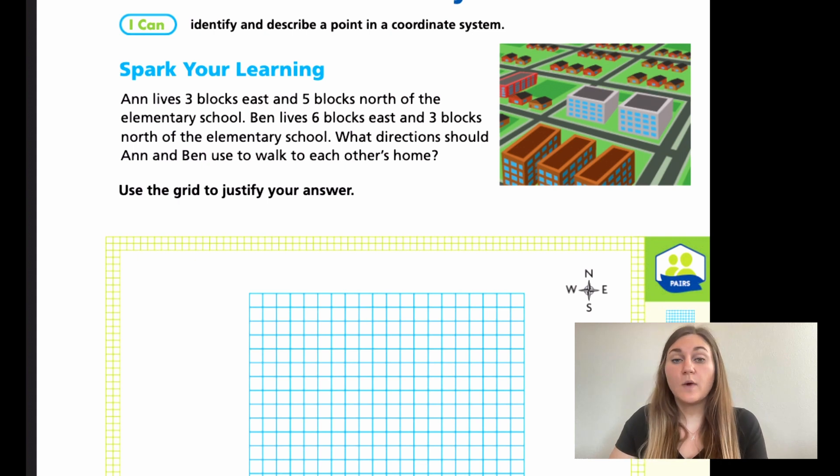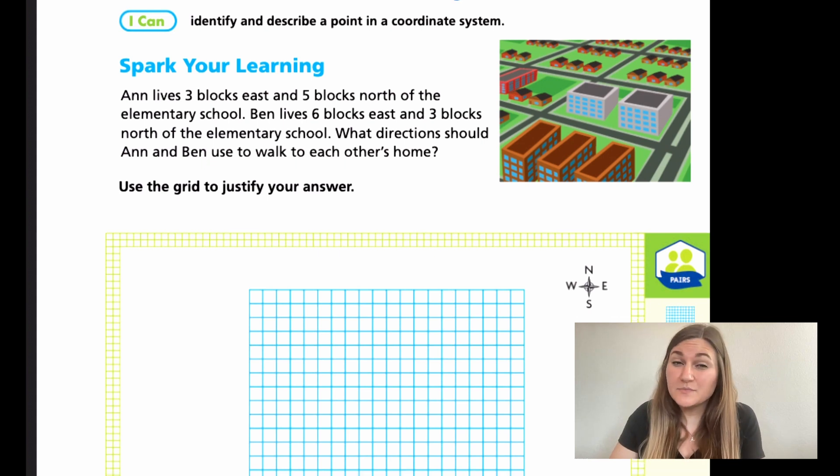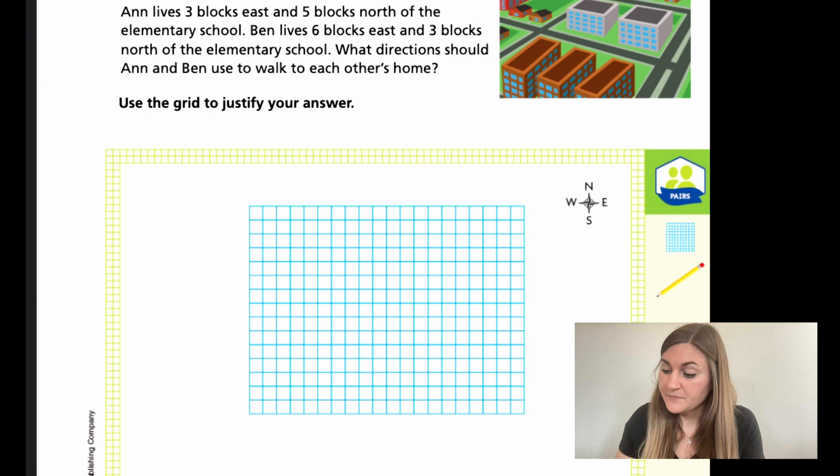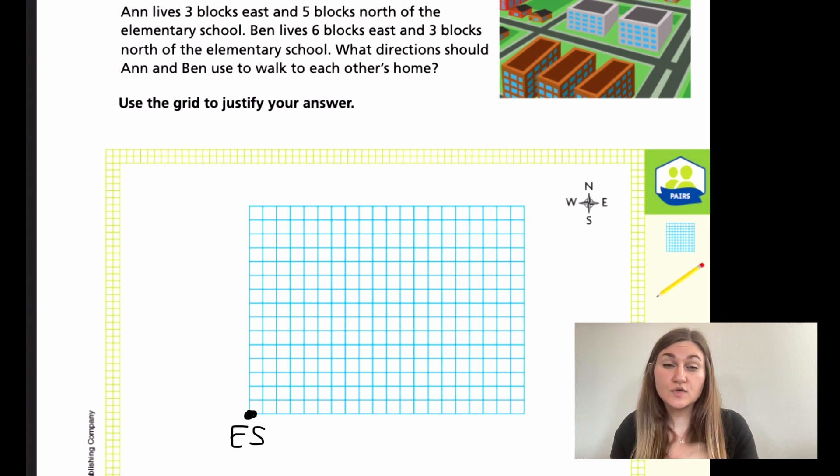It doesn't tell us exactly where the elementary school is on a grid, so I'm going to stick it in the corner for easy counting. I'm just going to draw a little point and say that is my elementary school, and I'm just going to label it E-S. Now let's start. It says Ann, she lives three blocks east, and east is going to the right. So I'm going to count three little squares over to the right. One, two, three, I would land right there.